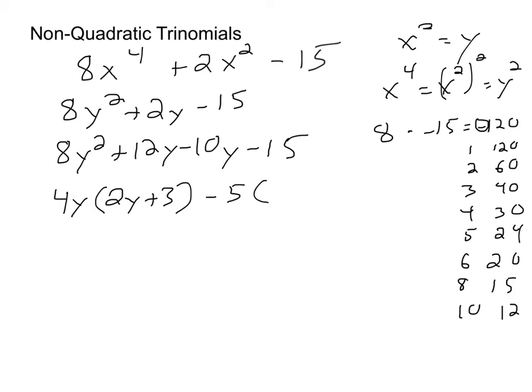Sure enough, if I take out a negative 5, that's exactly what will be left behind. And now because these two are identical, I'm able to factor that out, 2y plus 3. And I'm left with 4y minus 5, which of course came from the 4y and the minus 5.